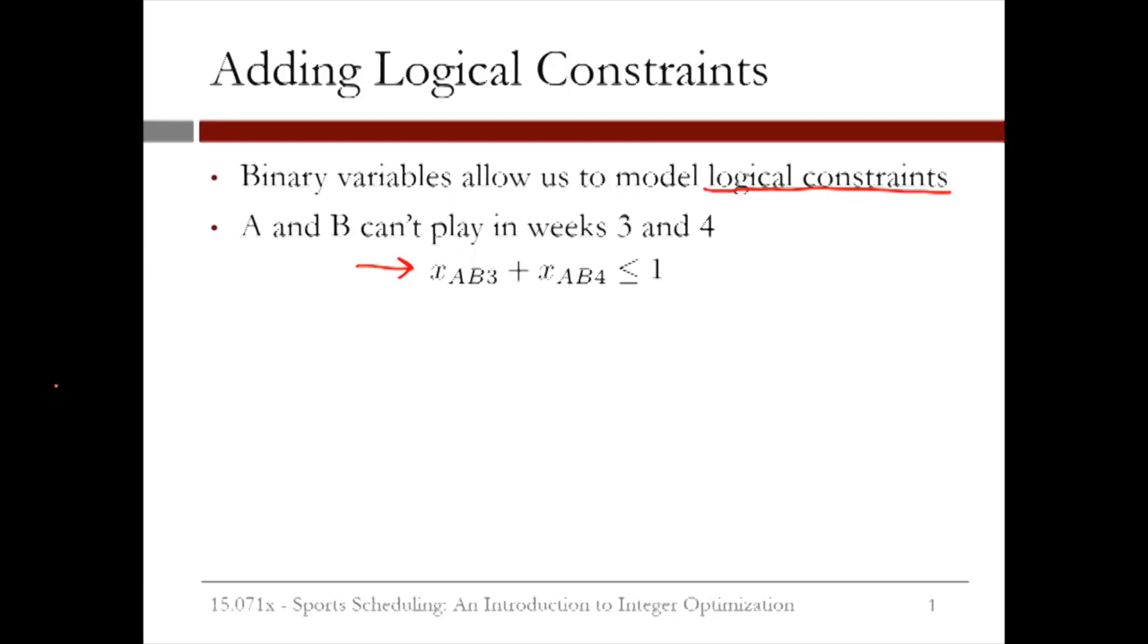Both variables can be 0, or one or the other can be 1. A solution with both variables equal to 1 would be infeasible. So this constraint models the restriction that teams A and B can't play in both weeks 3 and 4. Note that this only works because the variables only take values 0 or 1.